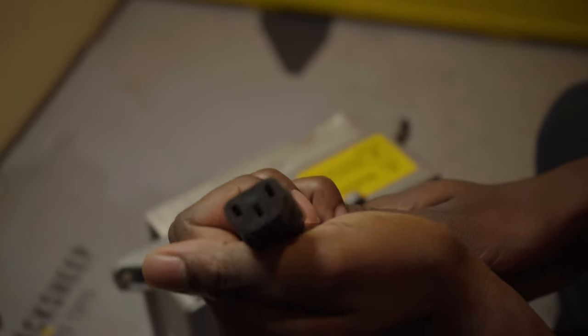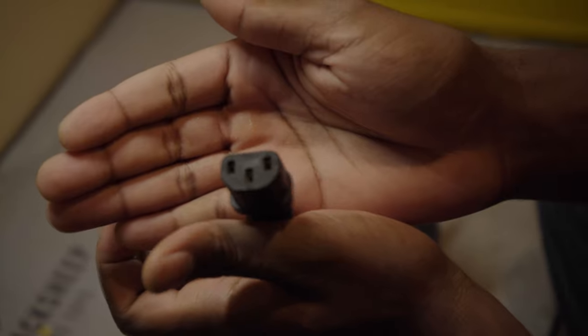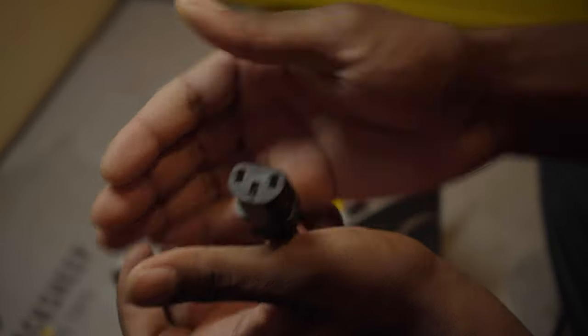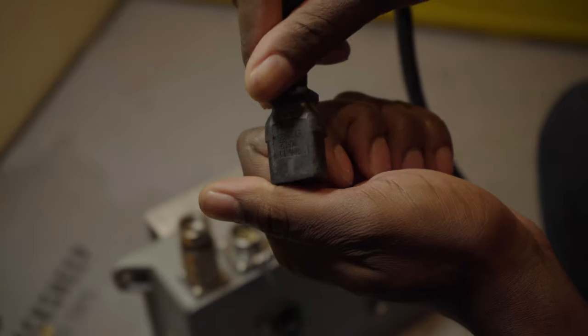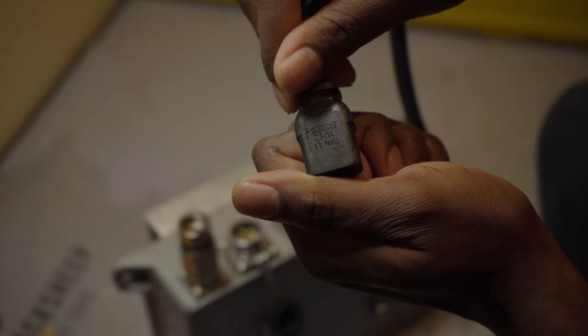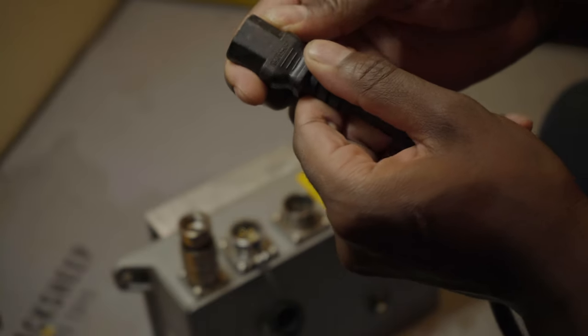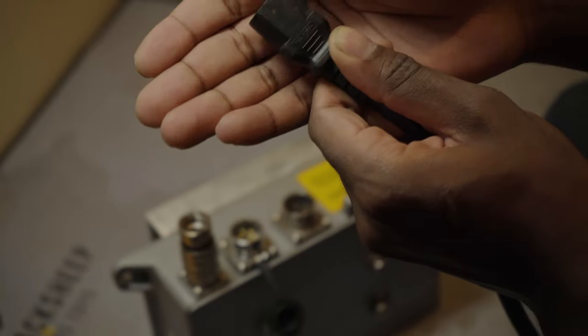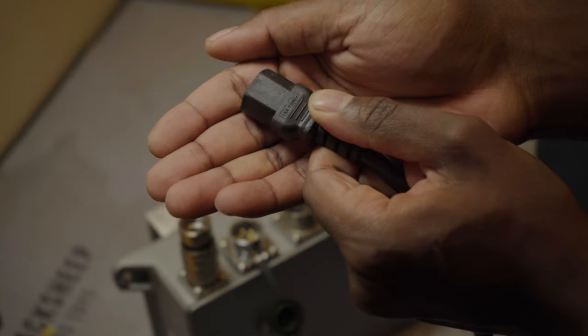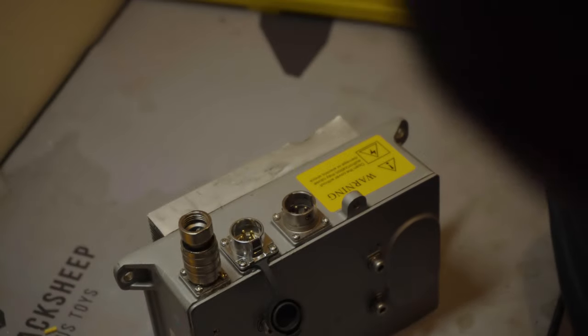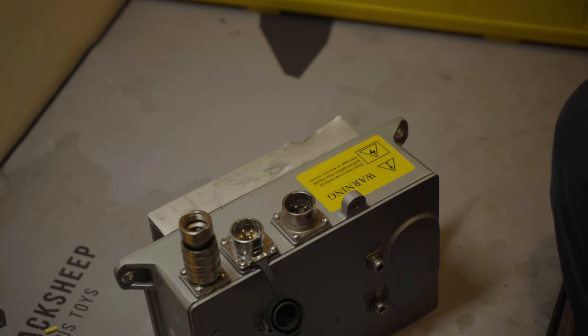So this is a C14. As you can see, it has the three prongs. And this one is actually rated for 15 amps. It's a little dirty. This one's rated for 15 amps at 125 volts, which is more than sufficient for the 750 watt onboard charger.